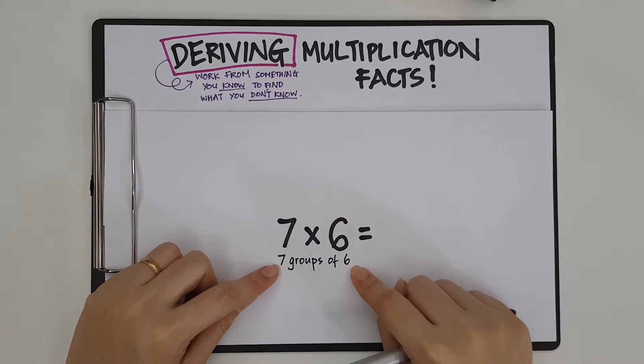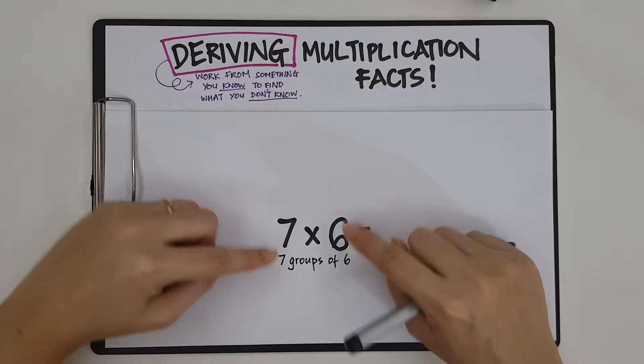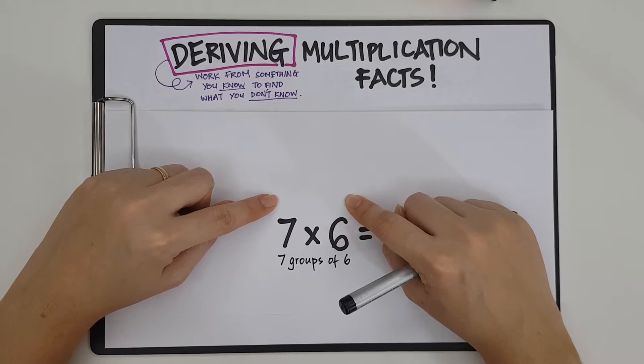7 groups of 6. Okay? And I'm going to think, what is the multiplication fact that is near 7 groups of 6 that I already know? Let's try working backwards. If I have 7 groups, how about 6 groups of 6? No, that's not easy.